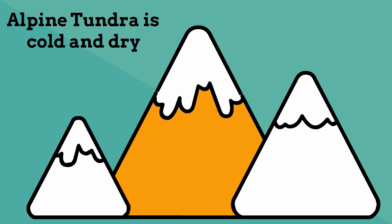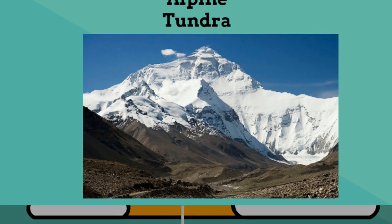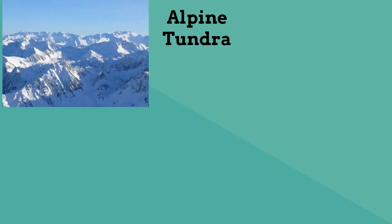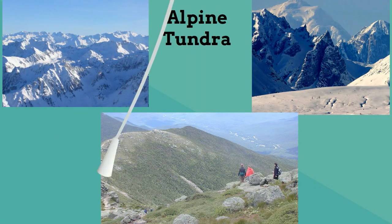Some common examples of the alpine tundra include the Himalayas, the Pyrenees, the Rocky Mountains, and the Alaska Range.